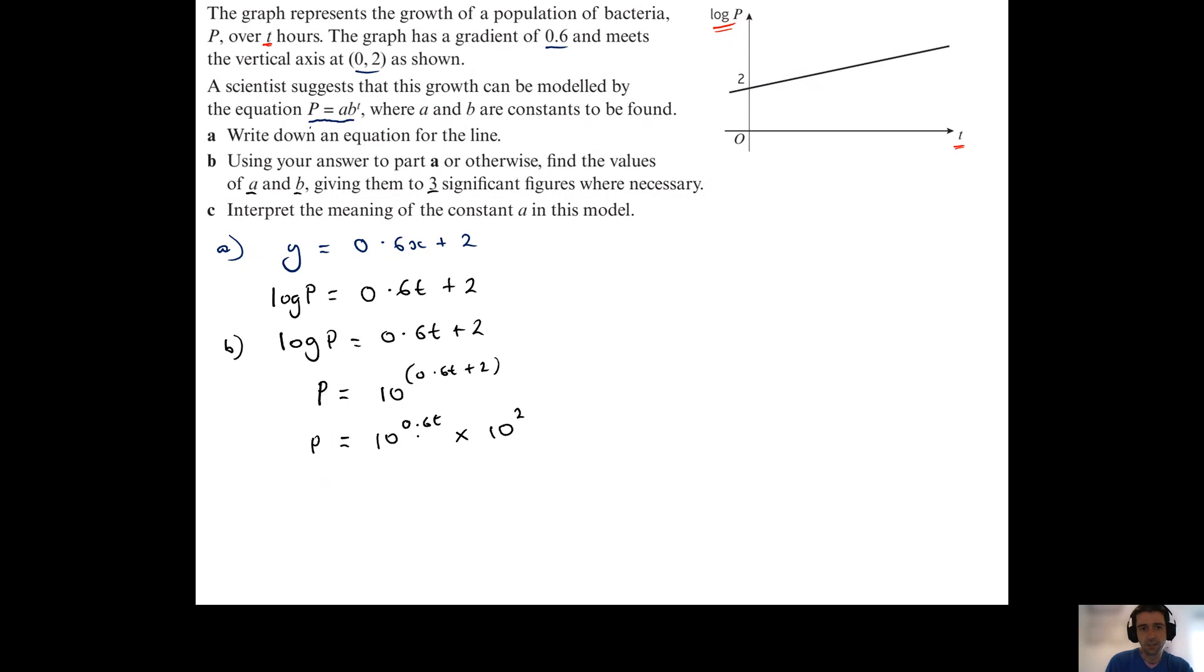Then I just need to have a look at this bit here. Now because we have 0.6 multiplied by t, it is possible to say that that is the same as 10 to the power of 0.6 to the power of t, because when you have powers either side of a bracket like so, you would multiply them.